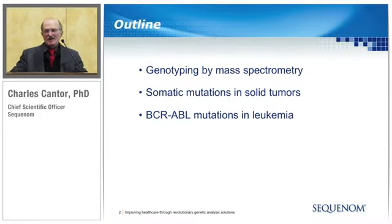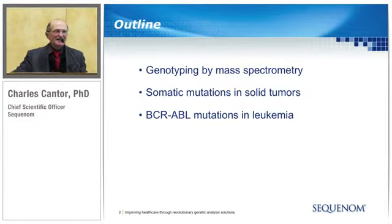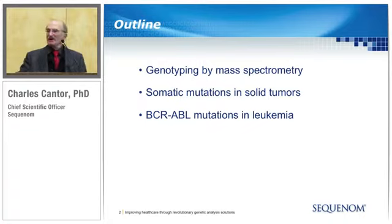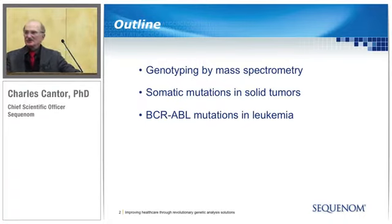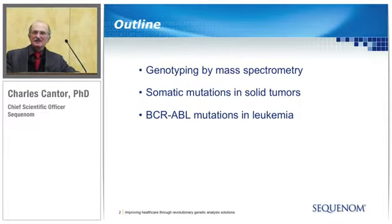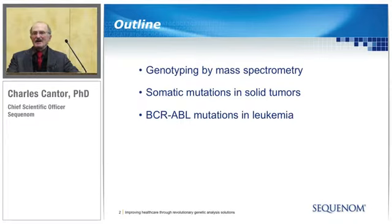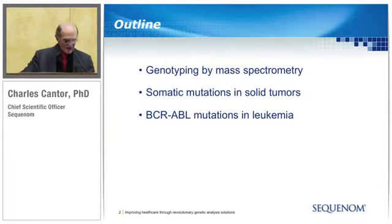So what I'm going to do this afternoon is remind any of you who are not aware that we use mass spectrometry, and then encourage you to forget about that. Then I'm going to show you some old and some relatively new results on looking at somatic mutations in solid tumors, and I'll conclude by showing you some results that were just published a few weeks ago on looking at BCR-ABL mutations in CML, in leukemia. What makes me potentially excited about this field is the thought that we may be able to do these measurements someday non-invasively — to find these mutations that define tumors without having to have a sample of the tumor. That's not the case today, but I believe we're very close, as you'll see by the last example.